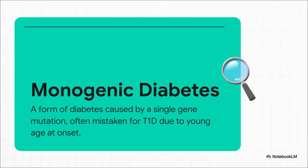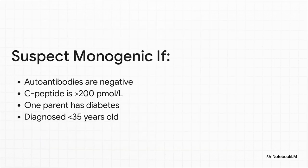Here's another big one to think about, especially in your younger, antibody-negative patients: monogenic diabetes. This is caused by a single gene defect, and it's so often misdiagnosed as type 1 because it can show up in young, thin people who need insulin at the start. When should your alarm bells go off? You're looking for a cluster of clues: the patient is antibody-negative but still has pretty good C-peptide levels, there's a strong family history — maybe a parent with diabetes — and they were diagnosed pretty young, say before age 35. If you see that combination, genetic testing is definitely something to consider.